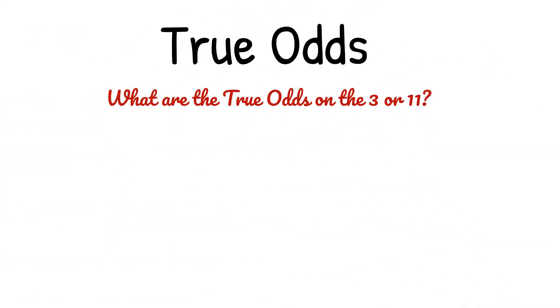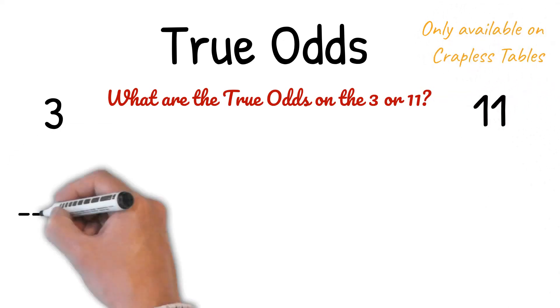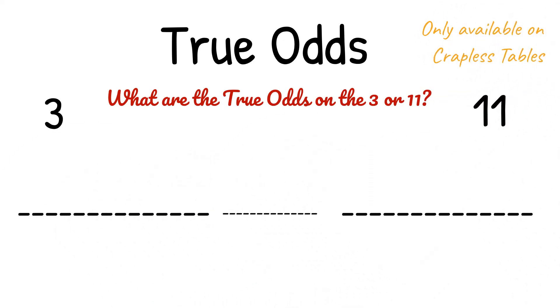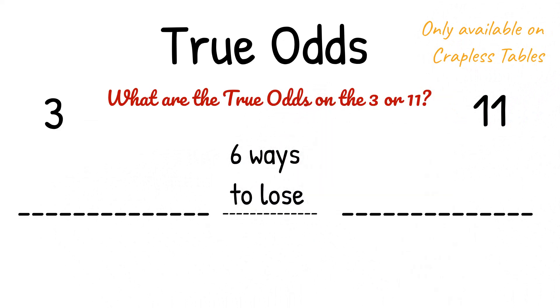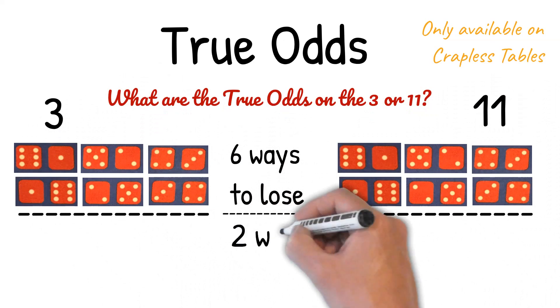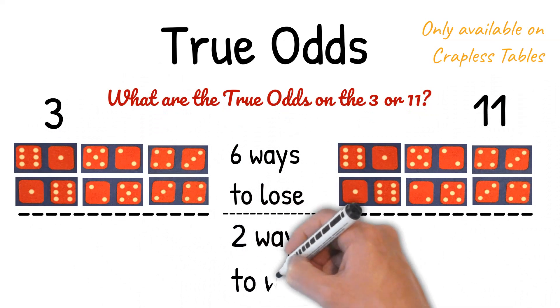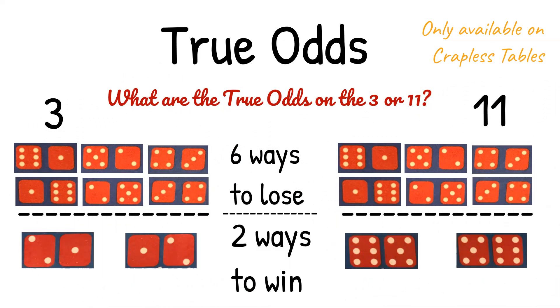What are the true odds on the 3 or 11? This is only available on crapless tables. Six ways to lose, 2 ways to win, which reduces to 3 to 1, or 3 to 1 as a ratio.